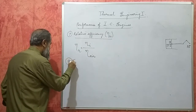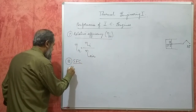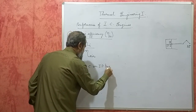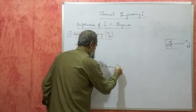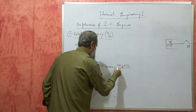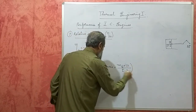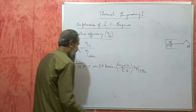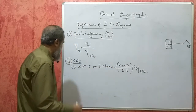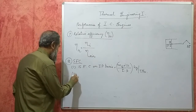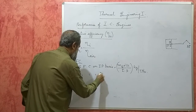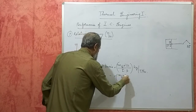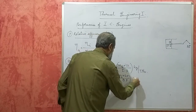Eighth is specific fuel consumption, SFC, which can be calculated on two bases. SFC on IP basis = fuel consumed in one hour / IP, in kg per IP-hour. SFC on BP basis is the same with BP instead of IP, in kg per BP-hour. This tells us how much fuel is consumed per unit of power per hour.